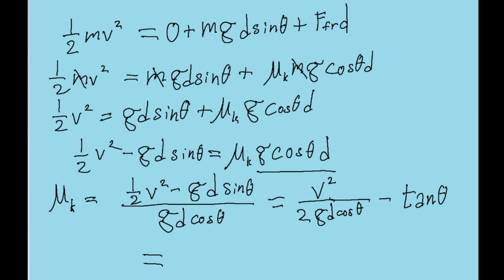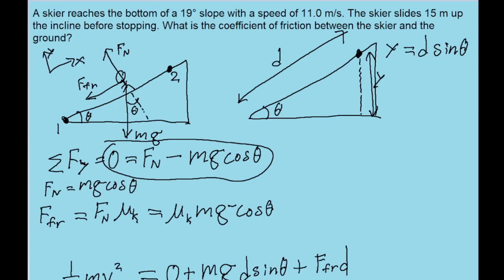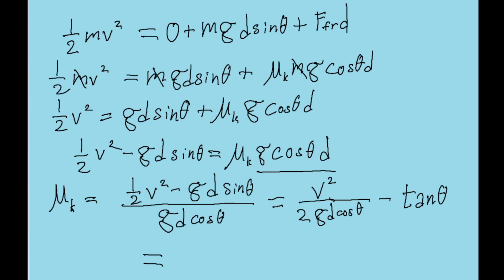Nevertheless though, when we plug in our givens, so when we plug in 11 meters per second for v, and 19 degrees for theta, and 15 meters for d, and 9.8 meters per second squared for g, then we find an answer, we find a coefficient of about 0.091, with no units. So that is the coefficient in this problem.